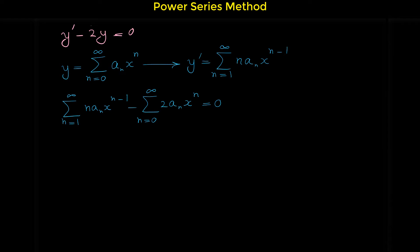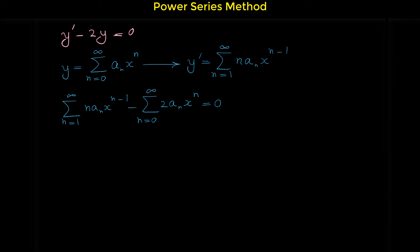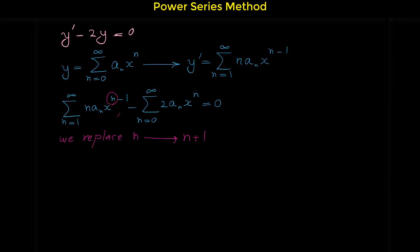At this step I want to make the power of x in both power series the same. The power of x in the first series is n minus 1, but in the second it is n. To change n minus 1 to n, we replace n with n plus 1, because then n plus 1 minus 1 equals n. We replace every n in the first series — this n, this n, and this n — with n plus 1.